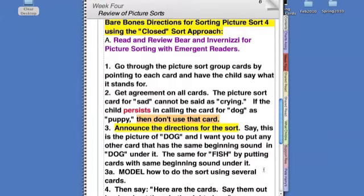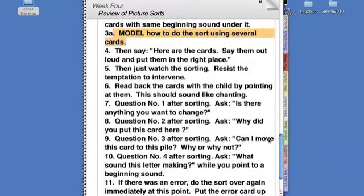Next, announce the directions for your sort. You've got to be clear. It's really hard at first, I know, but any type of confusion you see in the sorting is going to be based on that lack of clarity in your directions. Say this is the picture of dog and I want you to put any other card that has the same beginning sound as dog under it. The same for fish by putting cards with the same beginning sound under it. Model how to do the sort using several cards.